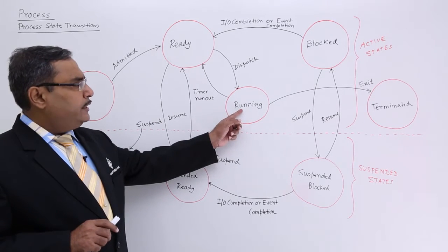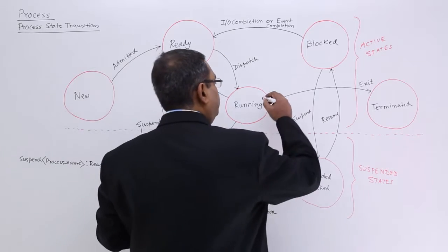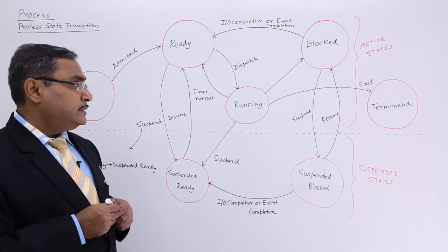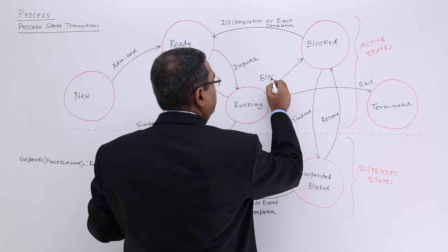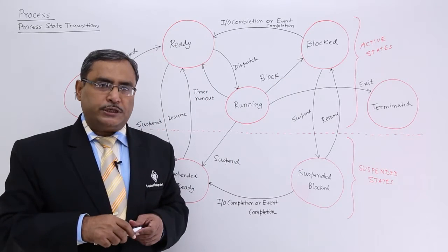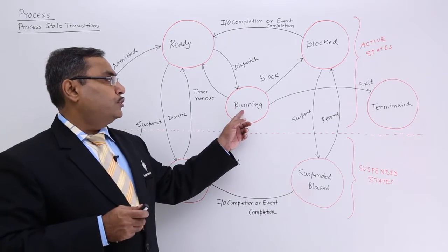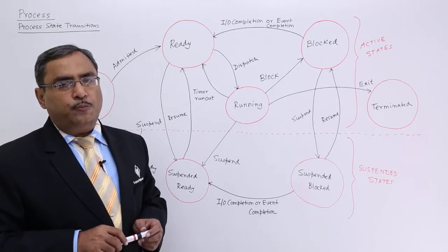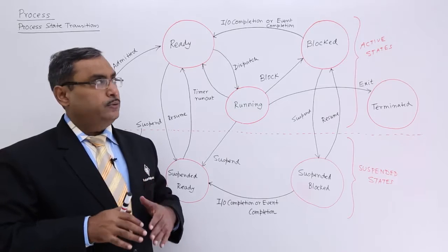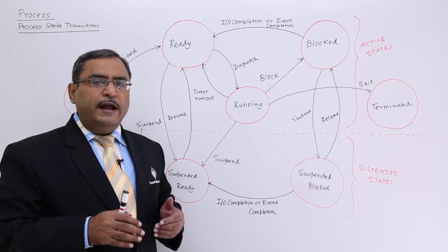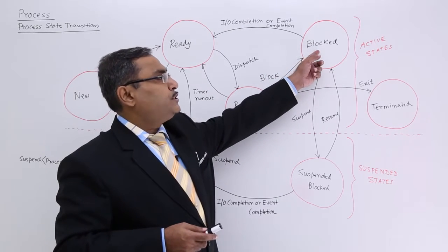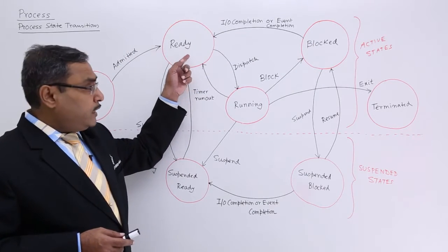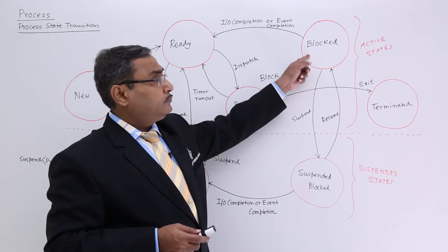During execution, the process can get blocked. For example, if the process is trying to do some input/output operation, then from the running state the process will go to the block state. The process will wait for the IO operation to complete. When that IO completion or event completion takes place, the process transitions from the blocked state back to the ready state.